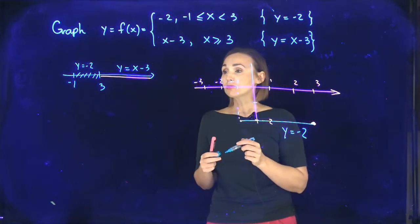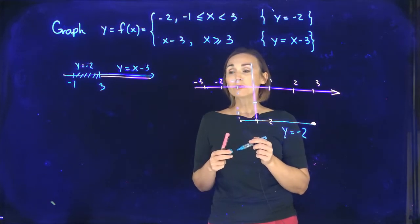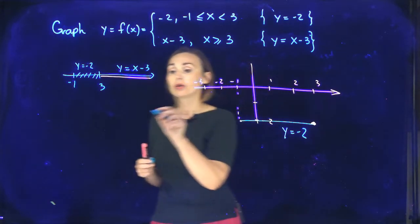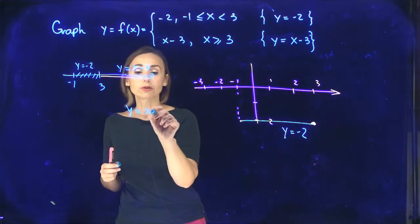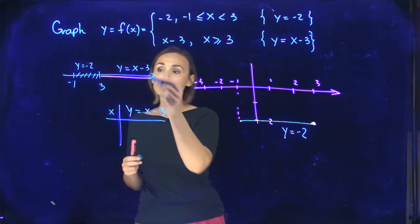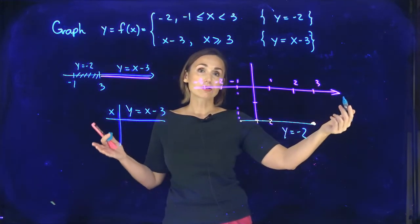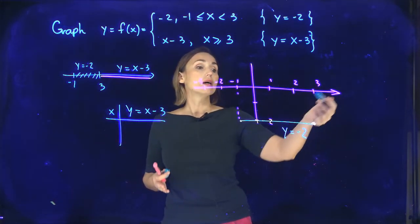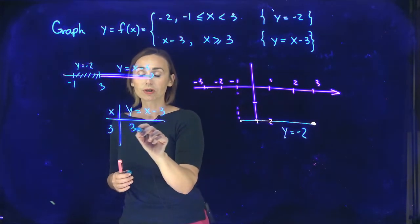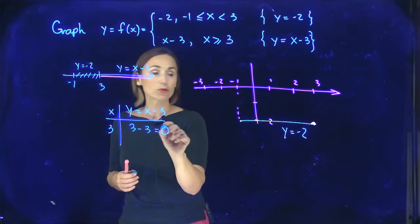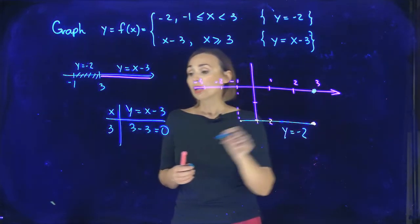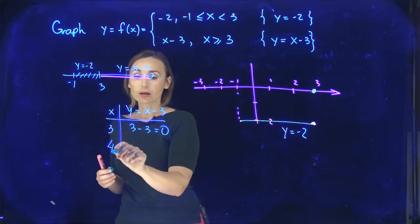Starting from 3, it's going to be the line y equals x minus 3. To graph y equals x minus 3, we need to know just a couple of points. I will take these points after 3 because it's reasonable — I need to draw it after 3. So let me start from 3: 3 minus 3 gives me 0, so the point will be (3, 0).